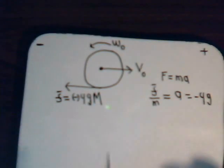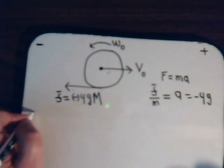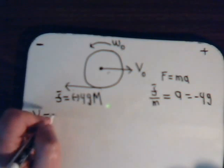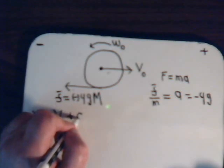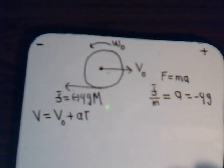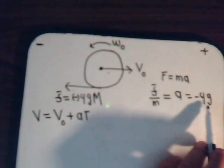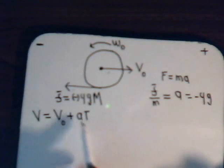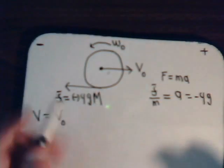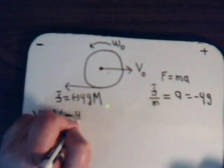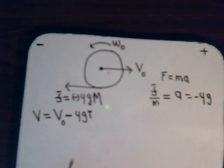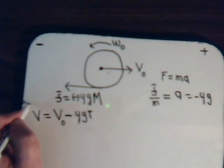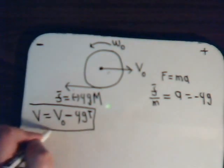We have the equation that velocity equals initial velocity plus acceleration multiplied by time. For our problem, acceleration is minus mu G, so V equals V-naught minus mu G times time. If we know the coefficient of friction, we can determine the velocity of the ball at any time.